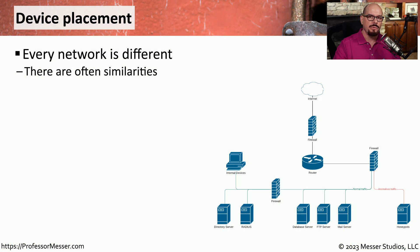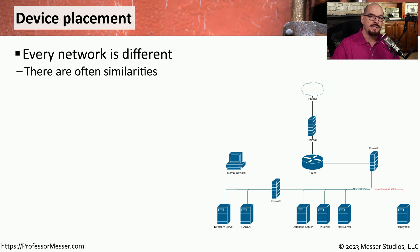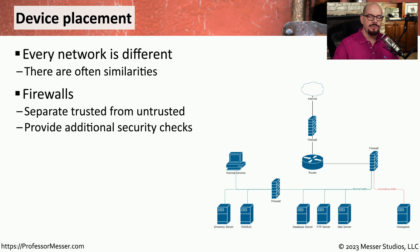I've worked on hundreds of different networks in my career, and everyone's network tends to have unique characteristics. This makes sense, because if you're working in a manufacturing environment, your network infrastructure is going to be very different than if you're working in a medical environment. But even with these dramatic differences between the overall goals of the organization, there are still parts of the network that are very similar. We tend to use firewalls to help us segment the network and determine where we might place different devices in our network infrastructure.